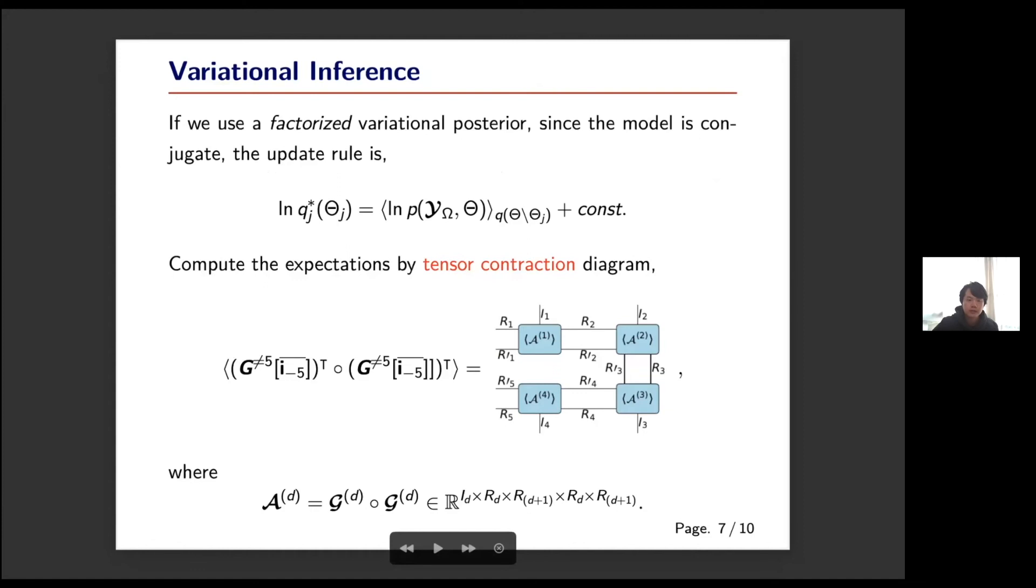Here is a very simple illustration of how we compute the expectation of the outer products of two subchains of the tensor ring format. This is very convenient to implement.